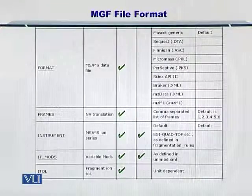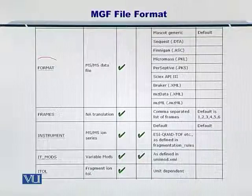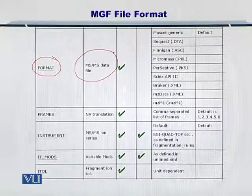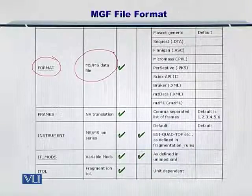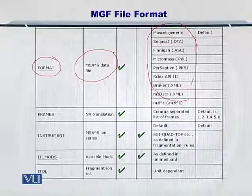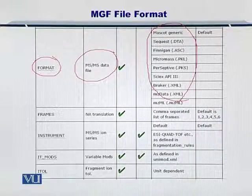Next, the format attribute gives you the MSMS data file format. This is your data coming from the mass spectrometer in terms of the mass-to-charge ratio and relative abundance. This data is dependent upon the type of mass spectrometer, and therefore there are multiple formats that can be used for setting this attribute.